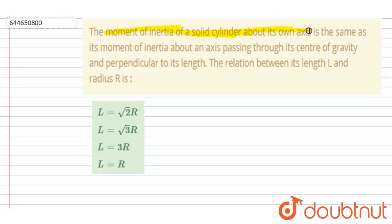...is the same as its moment of inertia about an axis passing through its center of gravity and perpendicular to the length. The relation between L and R is what we need to find. It is given that this is a solid cylinder.